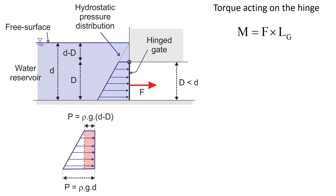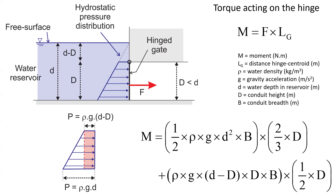Looking at the torque acting on the hinge, it is still equal to the force times the distance to the centroid. The moment is written as the contribution of the triangular distribution plus the contribution of the rectangular area. The distance to the centroid for the triangular distribution is two-thirds of D, and for the rectangular distribution it is half of D. We obtain the moment as: half of rho g D squared times B times two-thirds of D, plus rho g times (d minus D) times D times B times half of D.